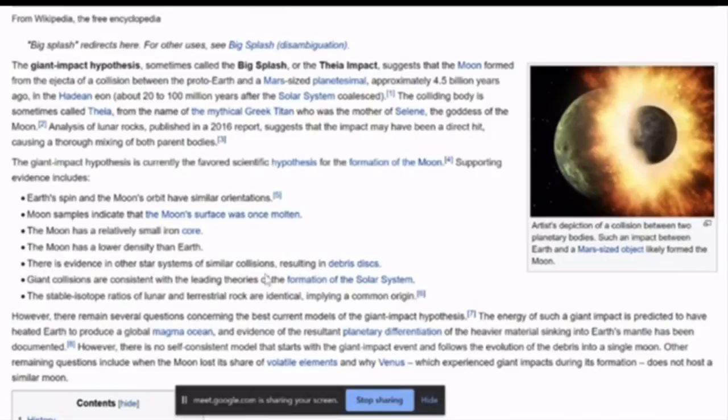There is evidence in other star systems of similar collisions resulting in debris disks, I don't know. Giant collisions are consistent with the leading theories of formation of the solar system. And the stable isotope ratios of lunar and terrestrial rock are identical, implying common origin.